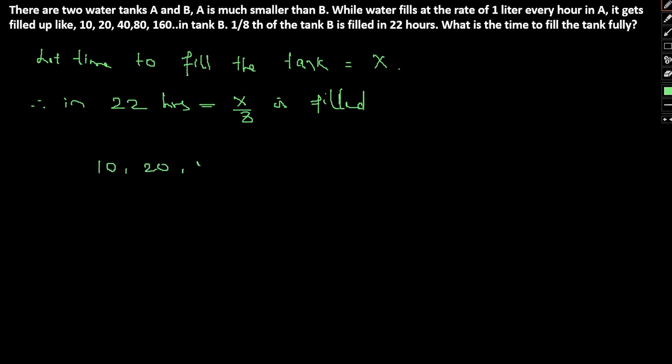10, 20, 40, 80, 160. This series is nothing but a GP series or a geometric progression series, where first term here is A equals 10 and the common ratio R is equal to 2.